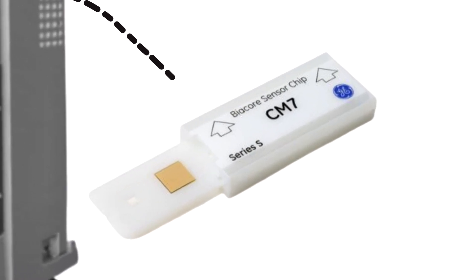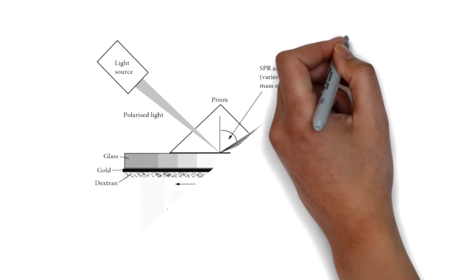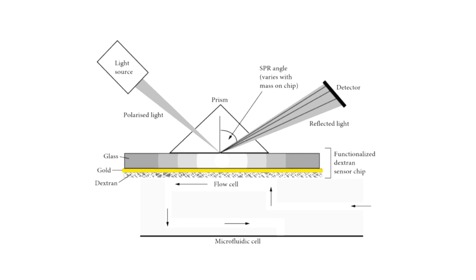Let's talk about the sensor chip now. This is where all the magic happens. In this chip, there is a glass slide coated with a thin layer of gold film. On top of this film is commonly a carboxylated dextran matrix to which the ligand is attached and immobilized.